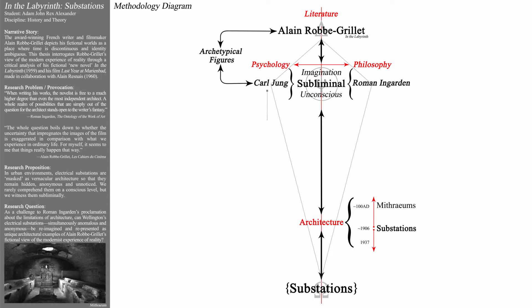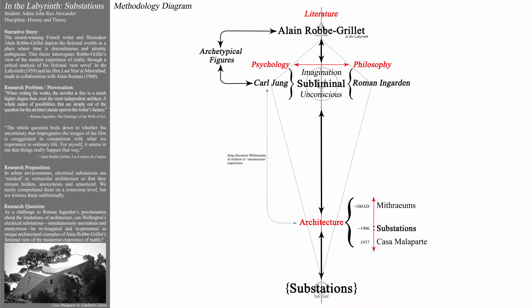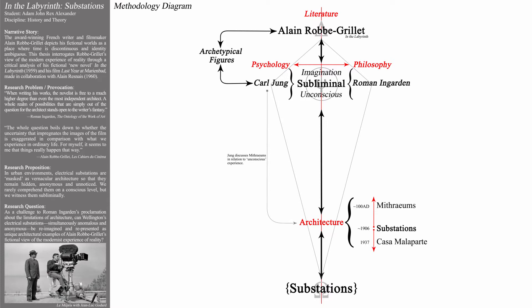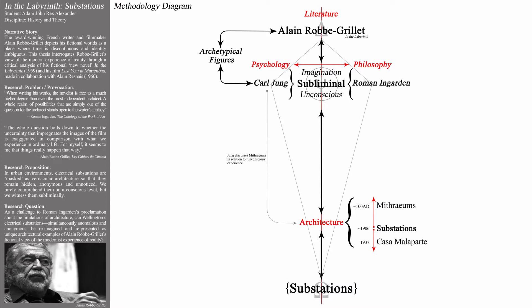In addition to substations, Adam investigated Mithraeum's — underground early Roman temples that Carl Jung believed were related to the unconscious. Adam also investigated the Casa Malaparte by architect Alberto Libera, which Alain Roque-Grié used as the architectural set for his film Le Mépris, created in collaboration with filmmaker Jean-Luc Godard. The critical selection of multidisciplinary theorists and architectural case studies enabled Adam to critically interrogate relationships between the literature of Roque-Grié and the substation architecture of Wellington.